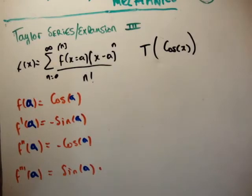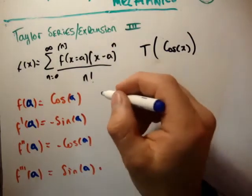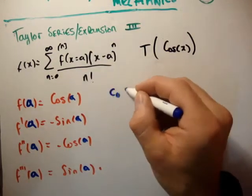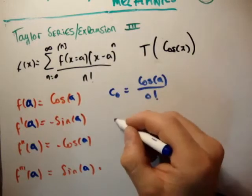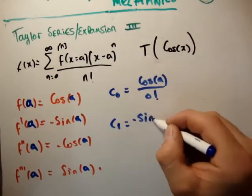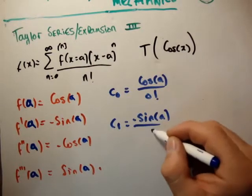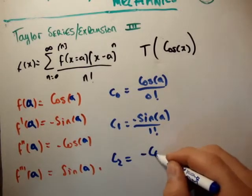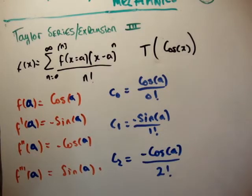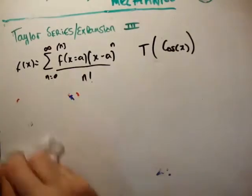So these allow us to calculate our coefficients. We know that each one of those divided by n factorial gives us our coefficients. So that means that c sub 0 is equal to cos a over 0 factorial, c sub 1 is equal to minus sin of a divided by 1 factorial, c sub 2 is equal to minus the cos of a divided by 2 factorial and so on.